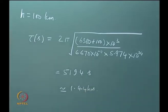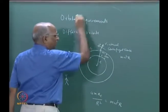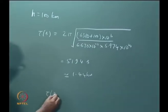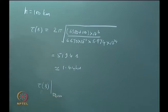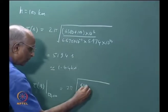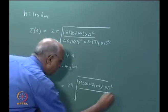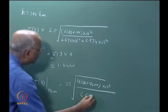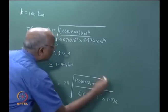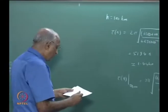Instead of 100 km, if I go to an orbit at a height of 50,000 kilometers above the earth, applying the same formula: τ = 2π × (6380 + 50,000) × 10³, divided by √(6.670×10⁻¹¹ × 5.974×10²⁴). This comes out to be something like 35.7 hours.